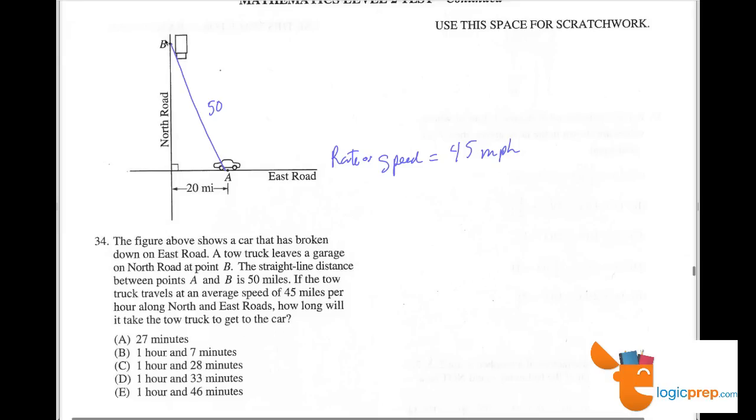Fair enough. So we need to know this distance here. So we're going to use Pythagorean Theorem. With 20 and 50 and B. B squared plus 20 squared equals 50 squared.